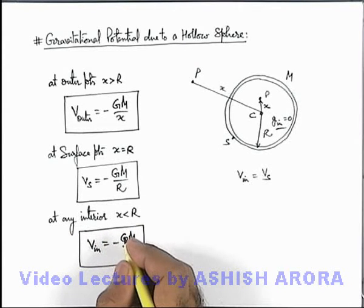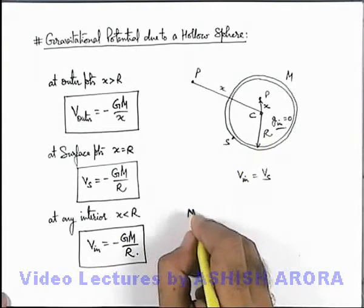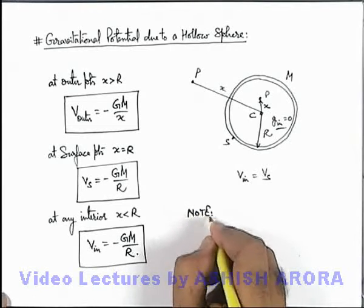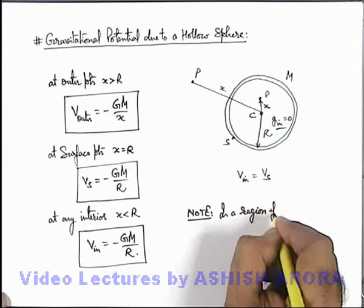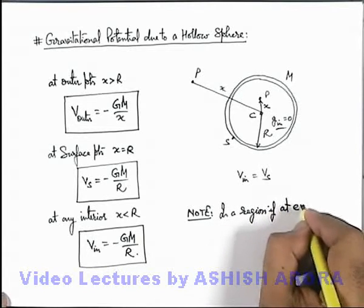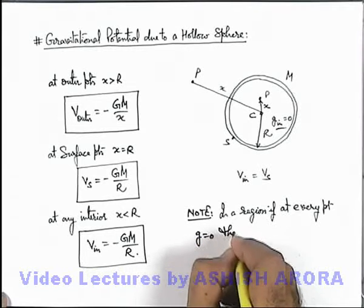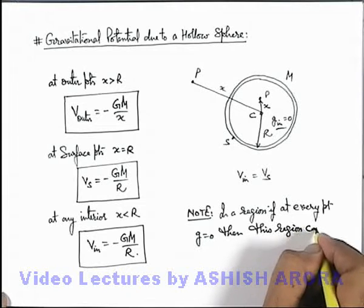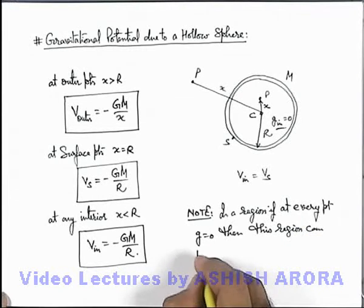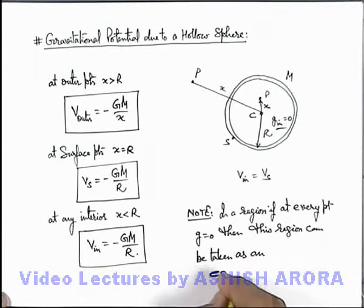So here we can also define one more parameter regarding the zone where g is zero. We can write down a note here that in a region, if at every point g is equal to zero, then this region can be taken as an equipotential region.